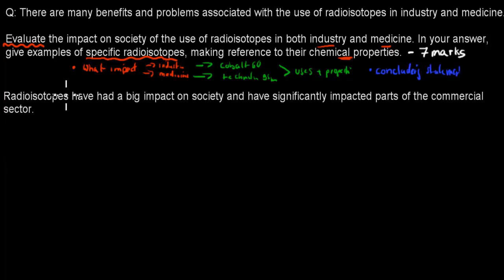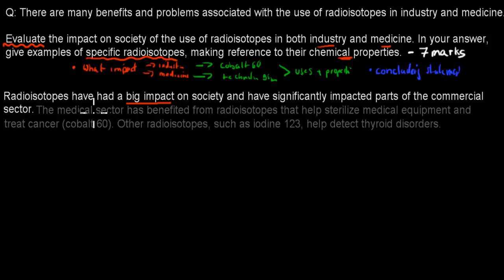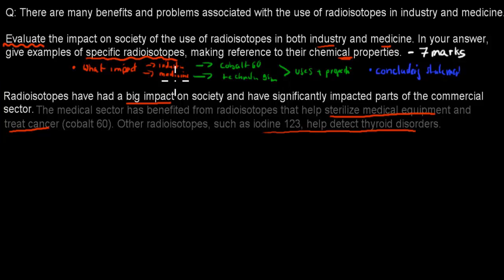So I'll go over the first sentence: radioisotopes have had a big impact on society and have significantly impacted parts of the commercial sector. Then I wrote: the medical sector has benefited from radioisotopes that help sterilize medical equipment and treat cancer. Other radioisotopes, such as iodine-123, help detect thyroid disorders. Now I've covered the general impact for medicine — I've mentioned examples such as iodine-123 and cobalt-60. If you can name them and say what their uses and benefits are, that's good, but giving a specific example is even better.